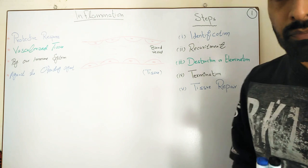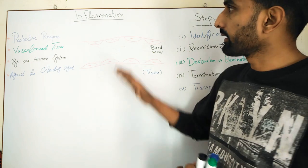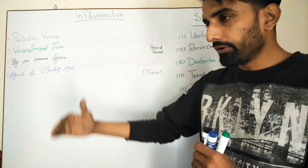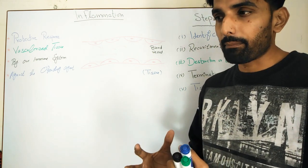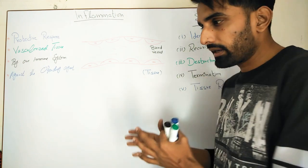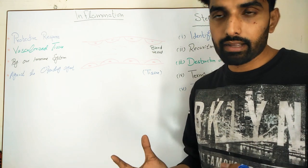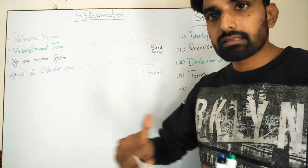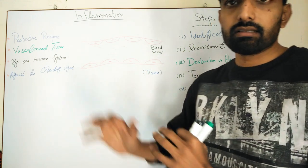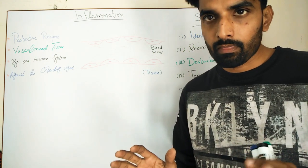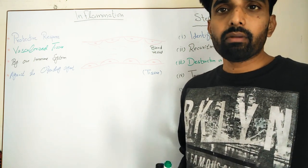Assalamu alaikum and welcome. Today we are going to start another series of lectures explaining a very important topic: inflammation. In this series of videos I will be explaining different types of inflammation, different events happening in the process of inflammation — cellular events, vascular events — their mechanisms, and the role of different mediators in inflammation. I assure you that if you stay with me till the end of this series, all your concepts related to acute and chronic inflammation will be very clear.